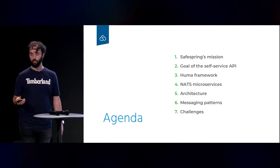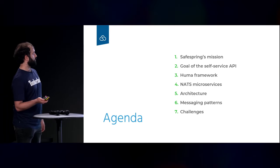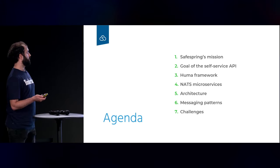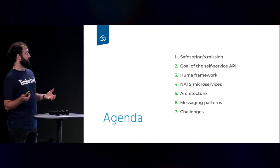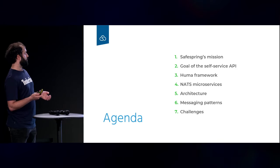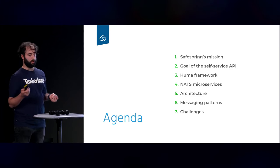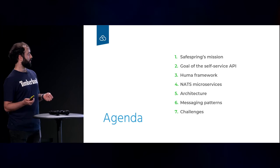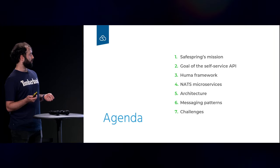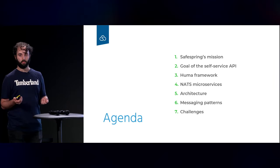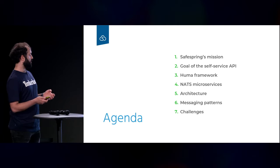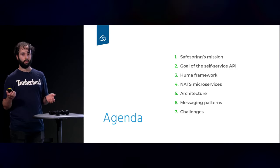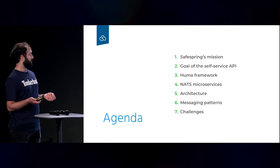This is a bit of the agenda. First, I will start talking about SafeSpring's mission, then I will go into the technical details about what the goals of the service API are, a bit about the Huma framework, how we have developed NATS microservices using one of the new NATS libraries called NATS Micro, and in general what type of messaging patterns we have implemented in this tool.